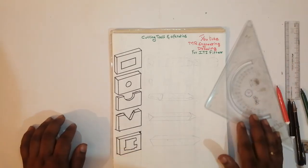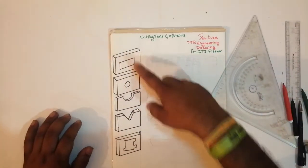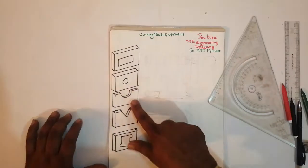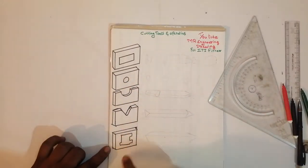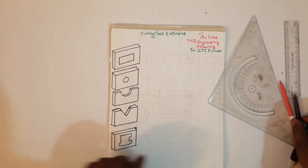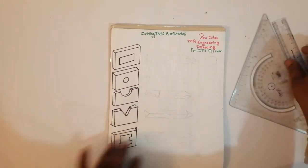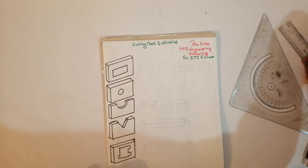Hello friends, today we'll learn how to draw a square file, round file, half-round file, triangle file, and knife edge file. Very easy and simple, and very neatly we can draw.